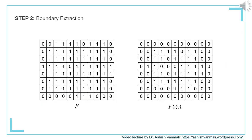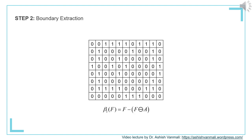In the second step we perform boundary extraction by the subtraction operation. We subtract the result of erosion, F erode A, from F. Both images are shown, and the corresponding result of subtraction — which is the boundary of image F using structuring element A — is shown in the next slide.